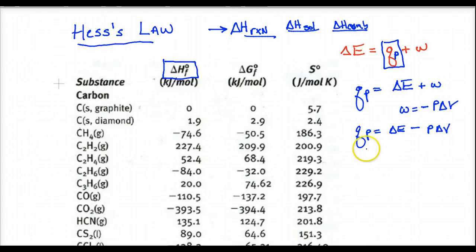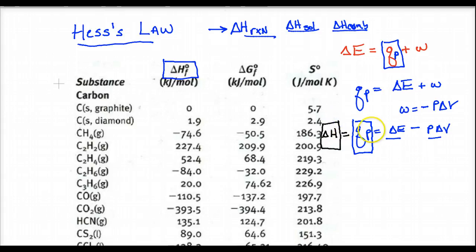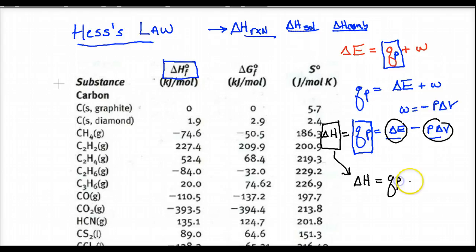We've got this expression that thermal energy — which is unfortunately a path function because it's Q — is equal to these state functions. So what we did is we created a new thermodynamic quantity called delta H. Because delta H is made up of other state functions, we can treat it as a state function. Delta H equals Q of P in constant pressure scenarios. That's why we can do calorimetry under isobaric conditions and get the Q value equal to the delta H.